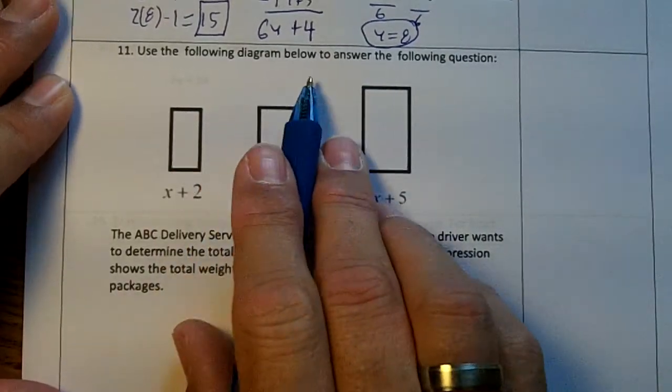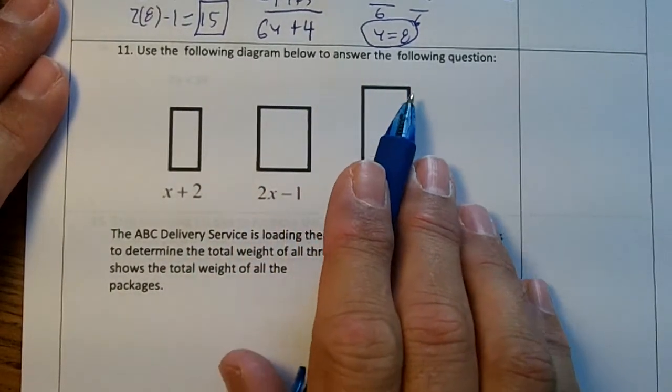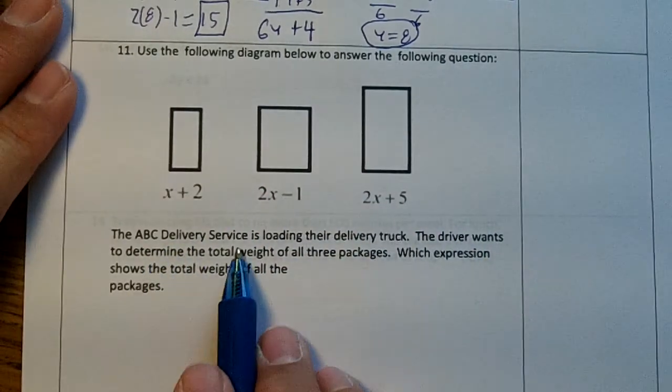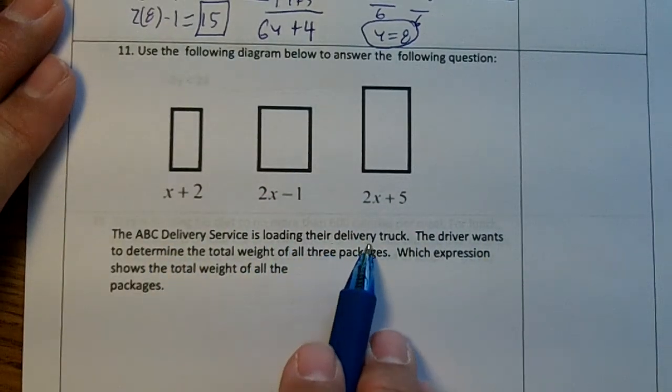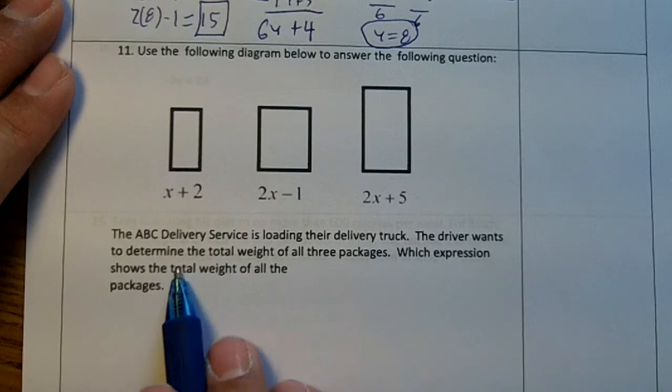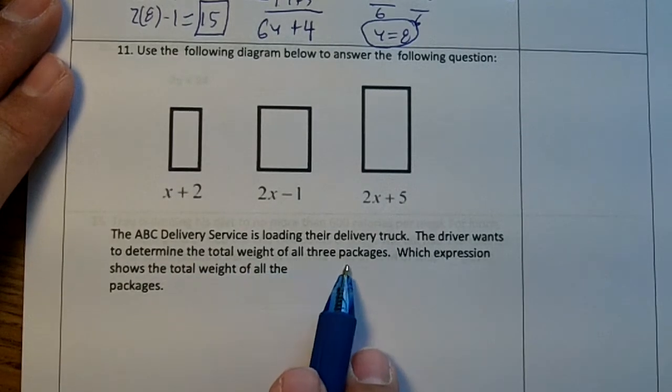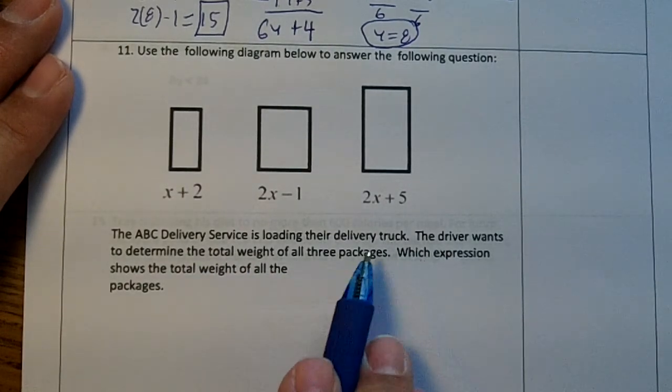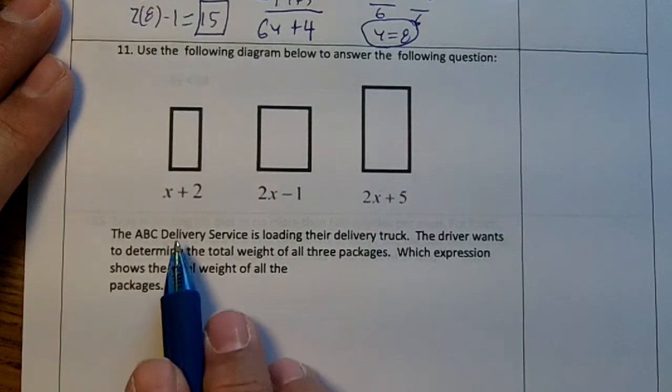Number 11. Use the following diagram below to answer the following question. The ABC delivery system is loading their delivery truck. The driver wants to determine the total weight of all three packages. Which expression shows the total weight of all three packages?